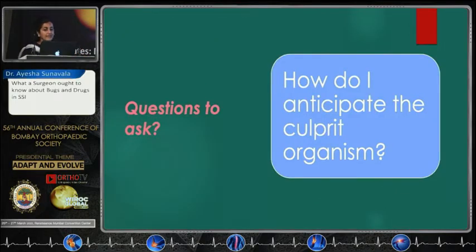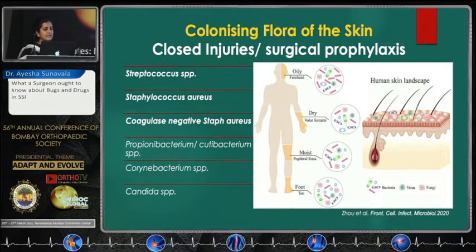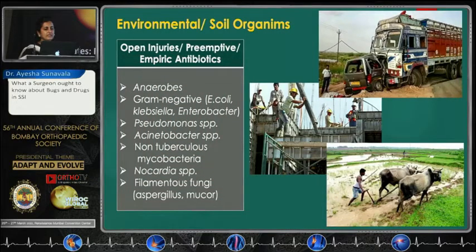Next question: how do I anticipate the culprit organism? Let's start by understanding the colonizing flora of the skin, which gives us an indication of what to think of in closed injuries or surgical prophylaxis for clean surgeries. Strep, staph, and coagulase-negative staph are really the most important skin colonizers and these are the ones that need to be routinely targeted. Environmental and soil pathogens are a completely different ball game — a host of organisms need to be considered when dealing with a patient who has had an injury at a contaminated site.